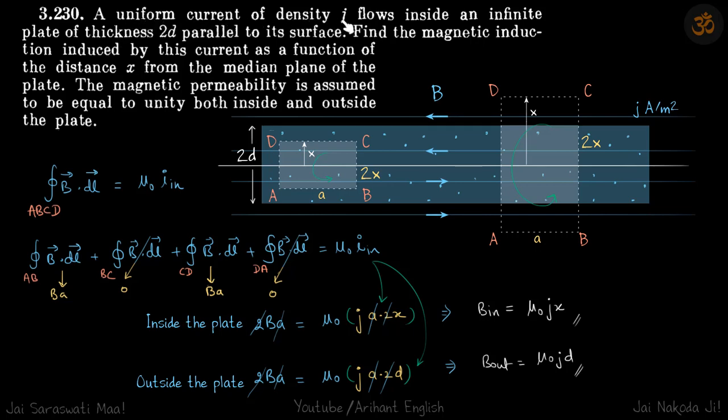Uniform current of density J flows through an infinite plate of thickness 2D parallel to its surface. So current density J means J ampere per meter square and this is a plate of thickness 2D. It's extended on both sides. We have only drawn a part of it.